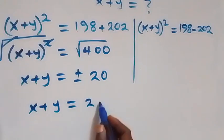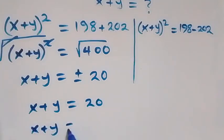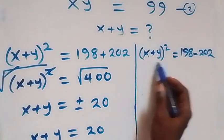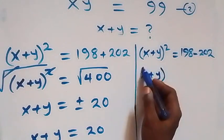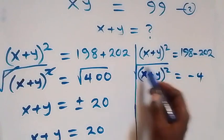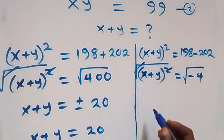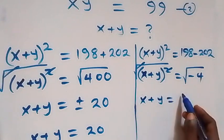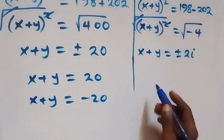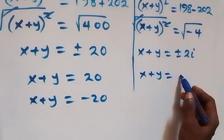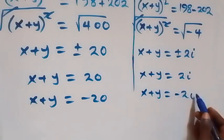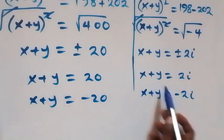So x plus y equals 20 or x plus y equals negative 20. For the second case, (x plus y) squared equals negative 4, so taking the square root gives x plus y equals plus or minus 2i. That is, x plus y equals 2i or x plus y equals negative 2i, which are two complex solutions.